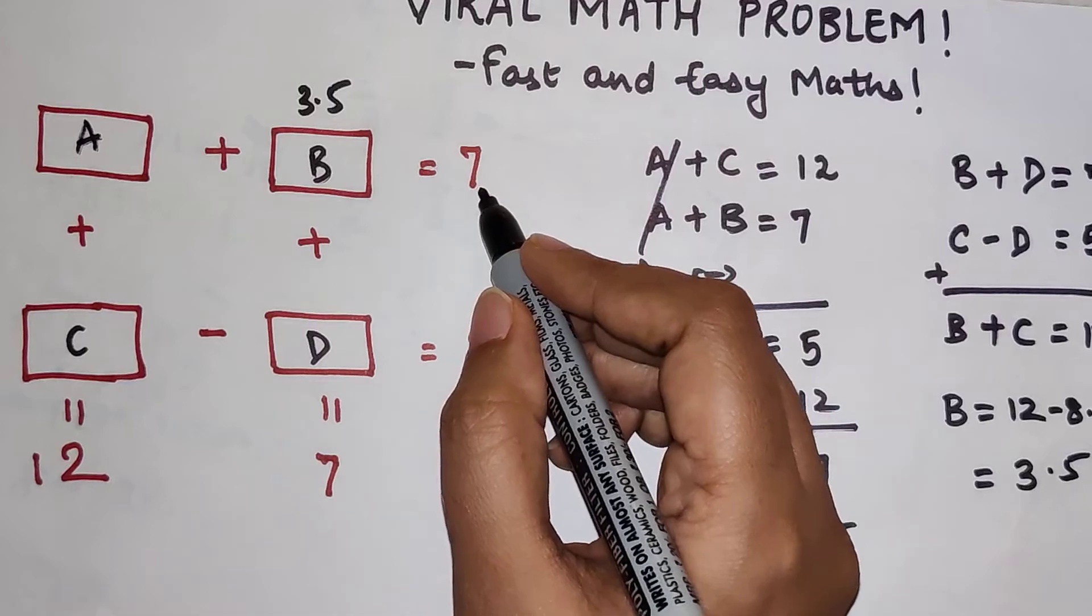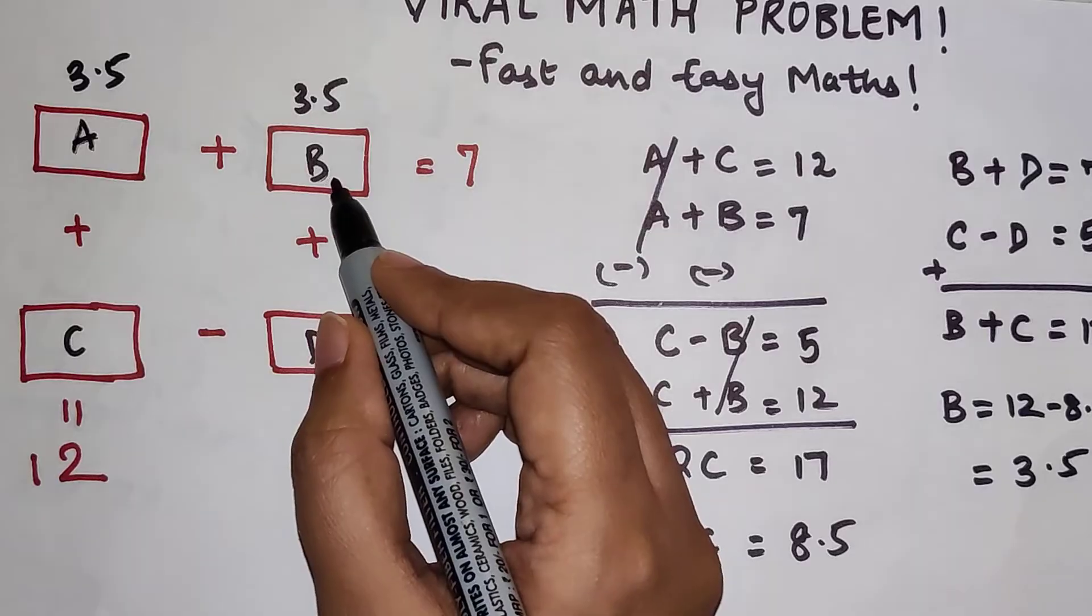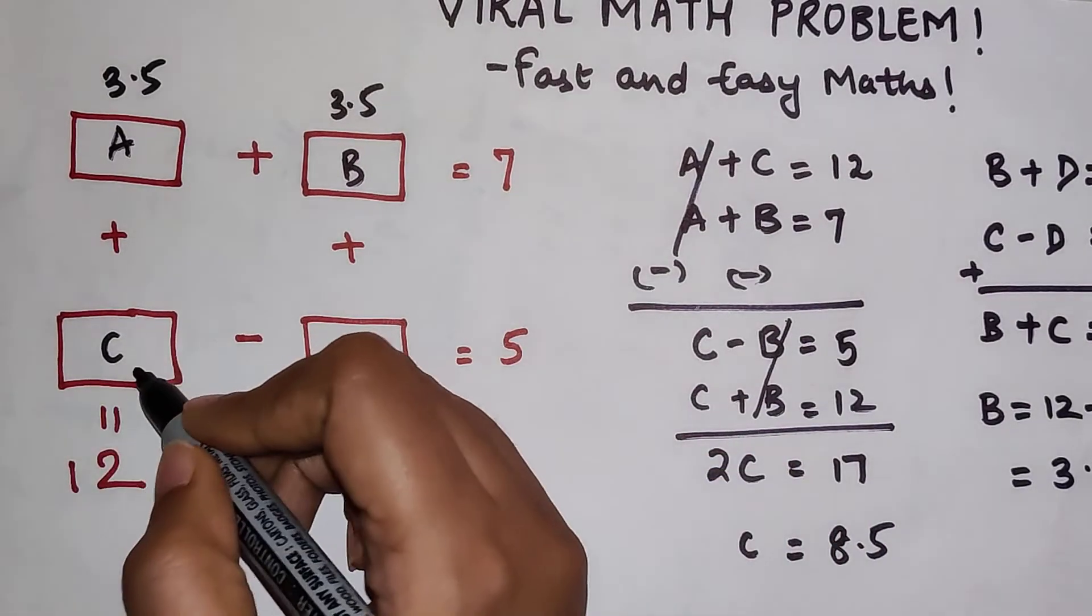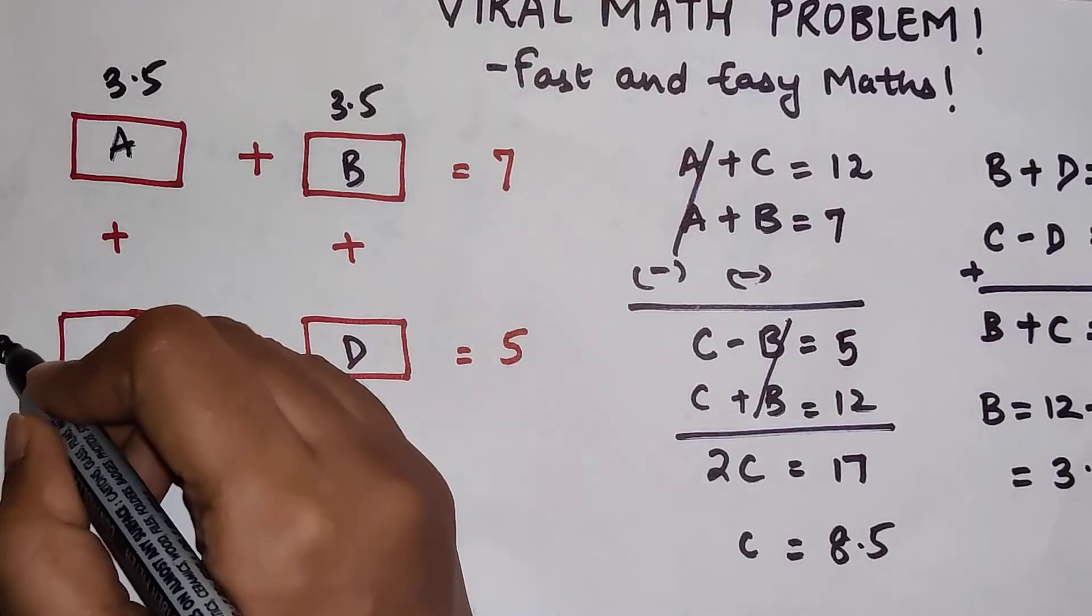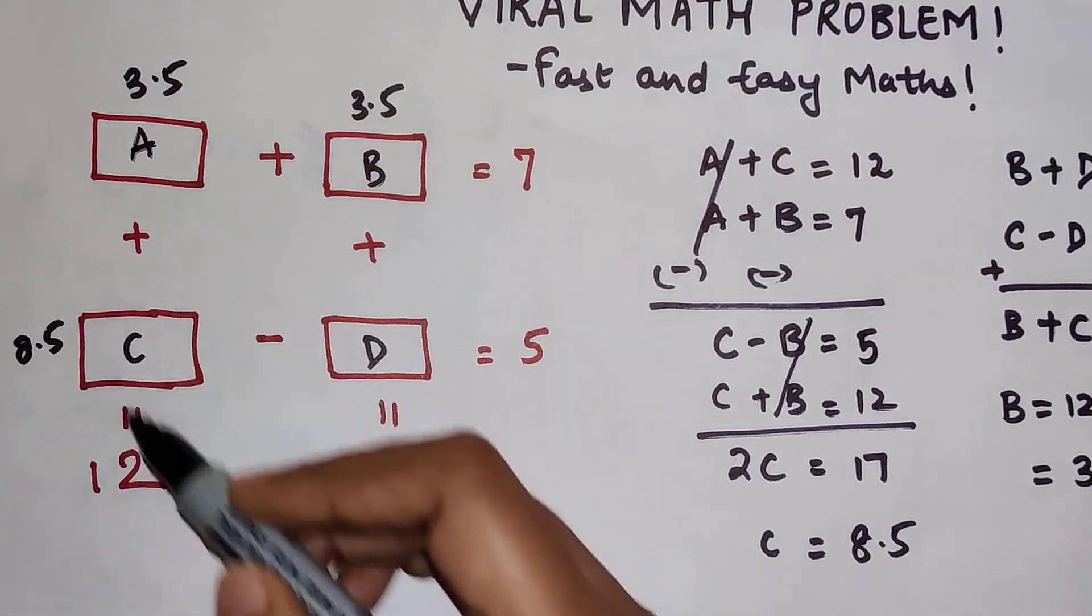...and this equals 7, then by default this also has to be 3.5, right? Because 3.5 plus 3.5 will get me 7. And the value of C is 8.5, so 3.5 plus 8.5 is getting you 12, correct.